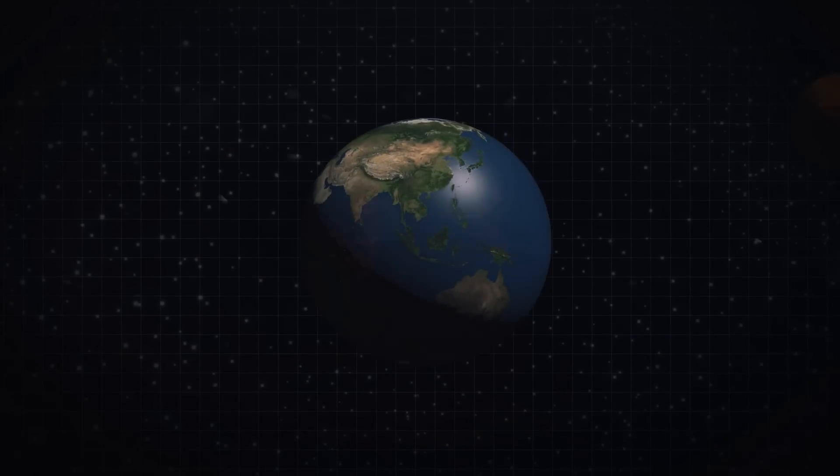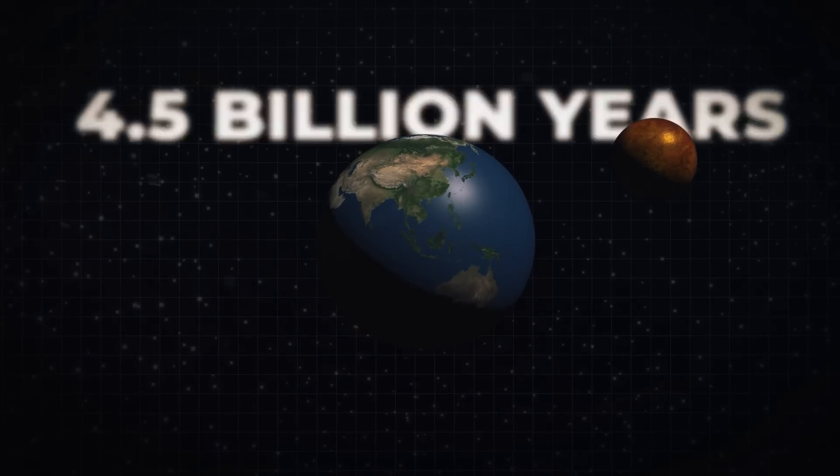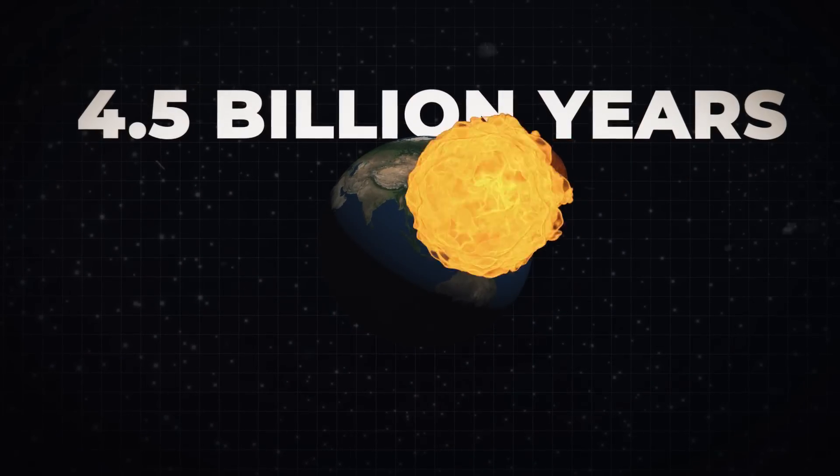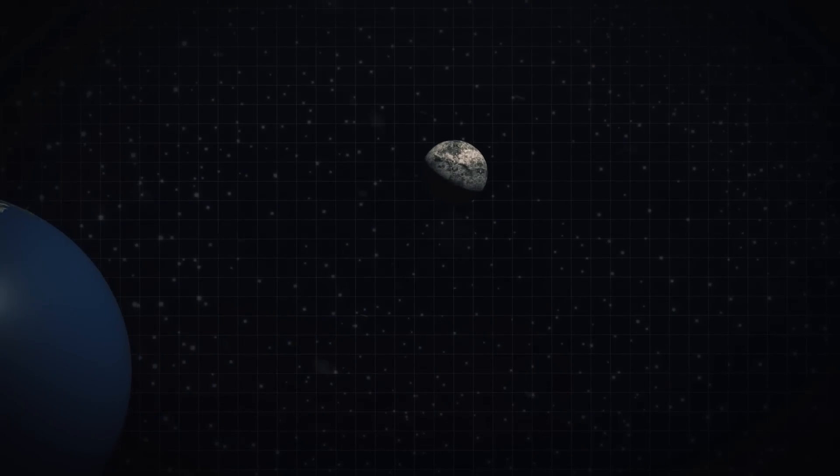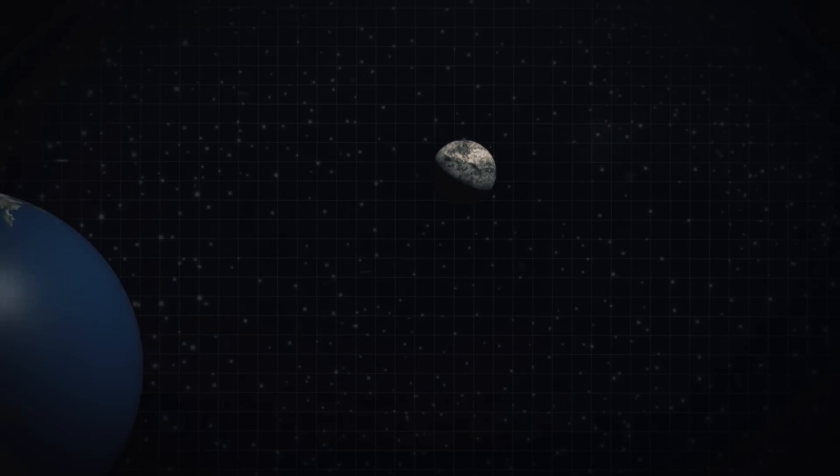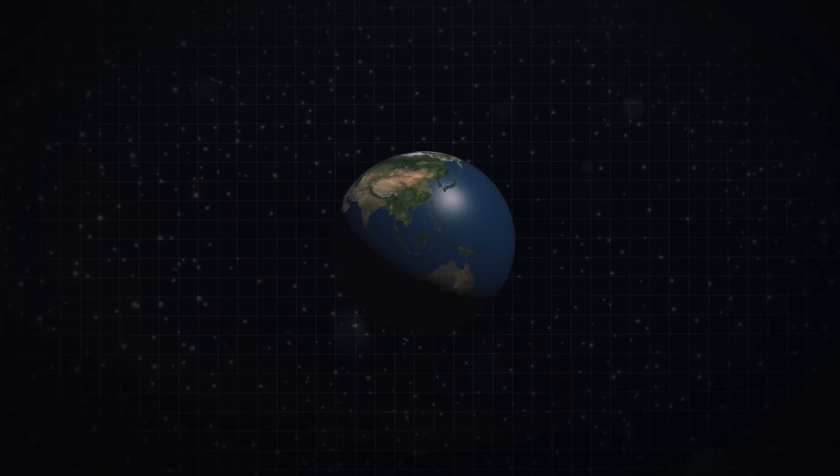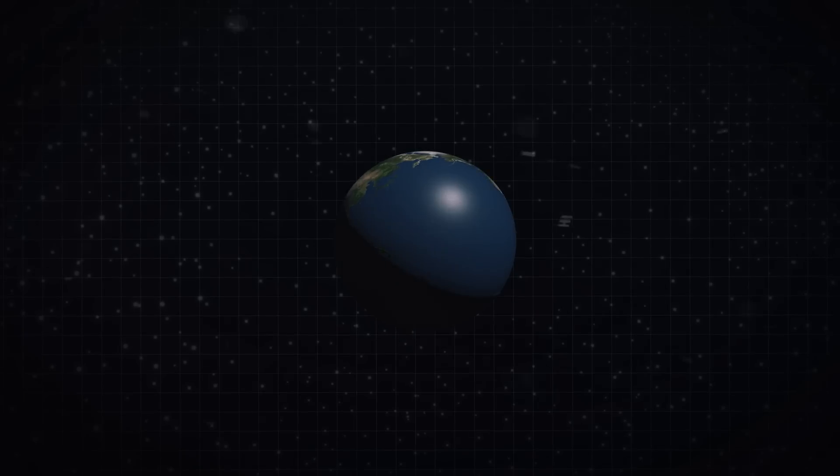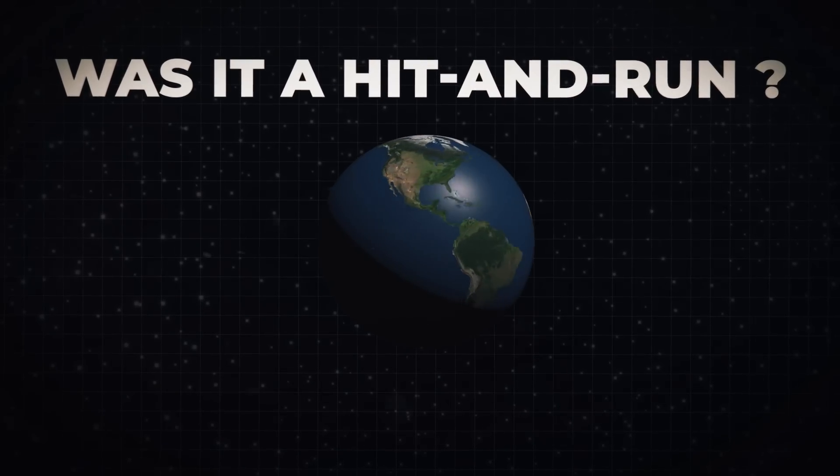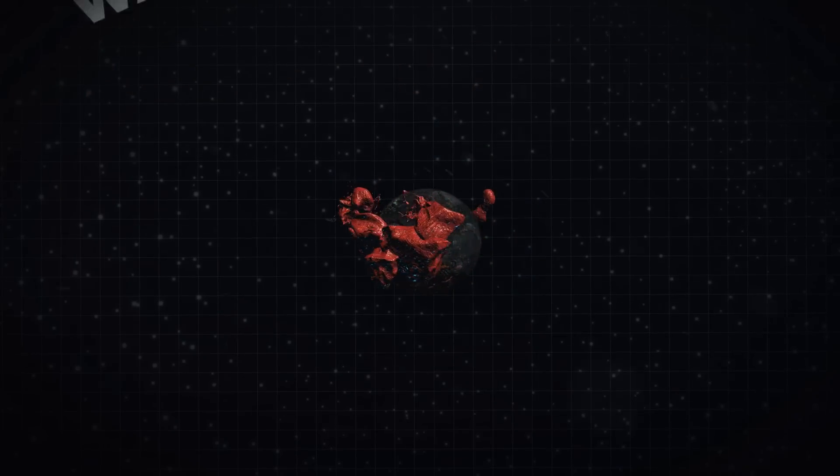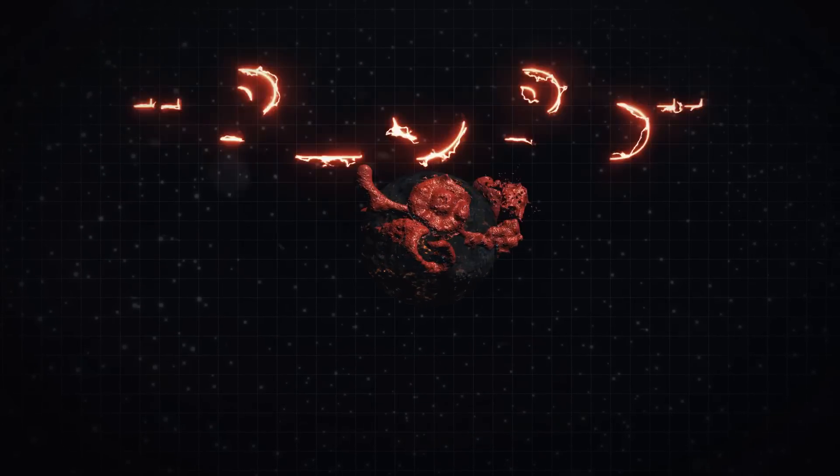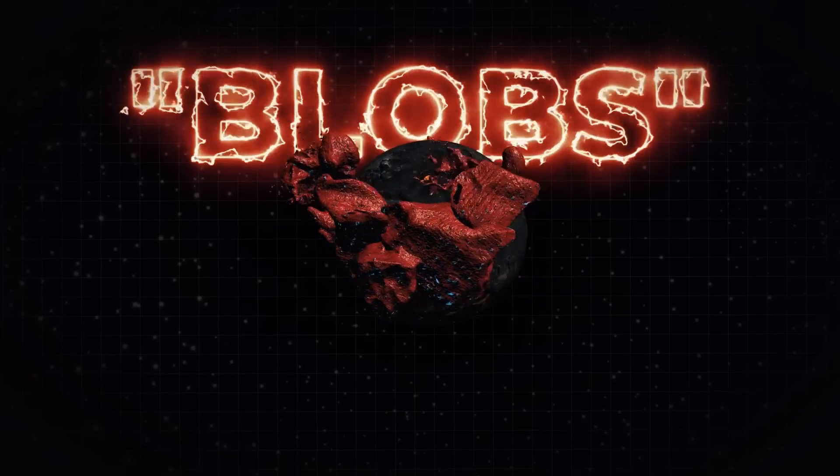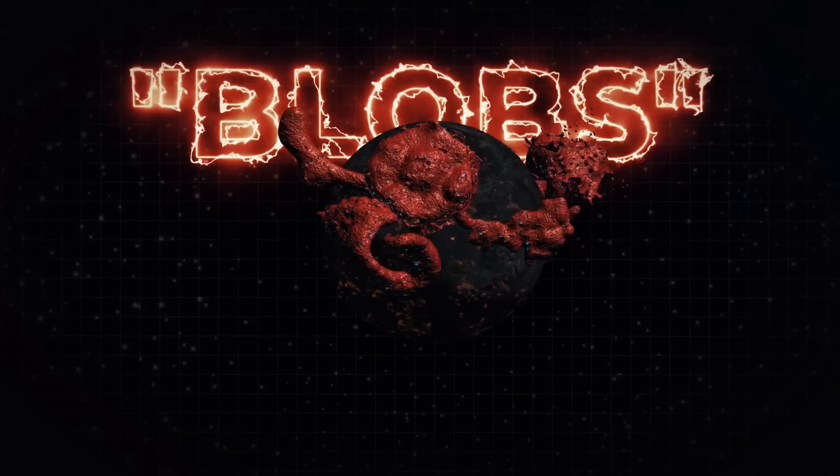A planet named Theia collided with the proto-Earth 4.5 billion years ago, and the result was the creation of our favorite satellite, the Moon. However, specifics of Theia's fate are still up in the air. Was it a hit-and-run, or did the mantles of the two planets combine? And why does Earth's core have blobs on the other sides of continents? Let's find out.